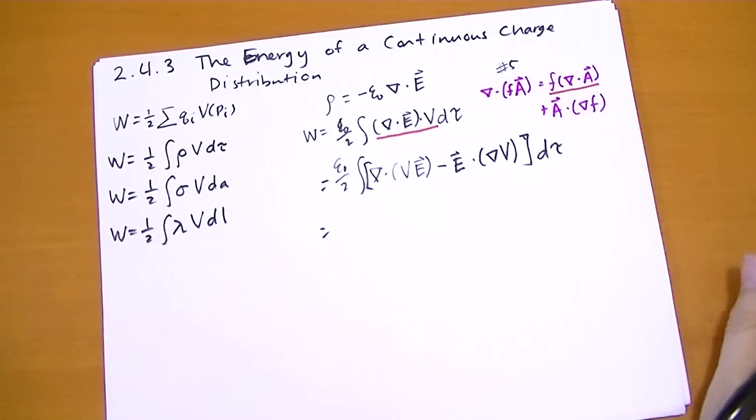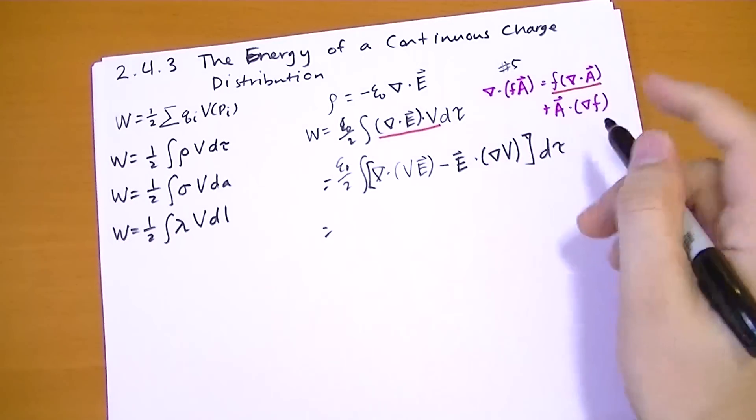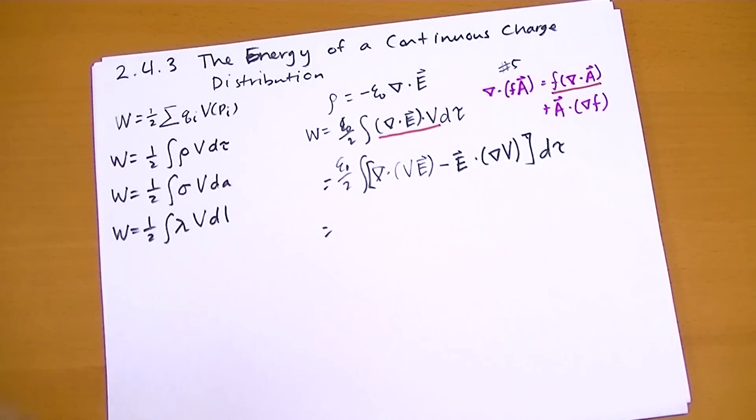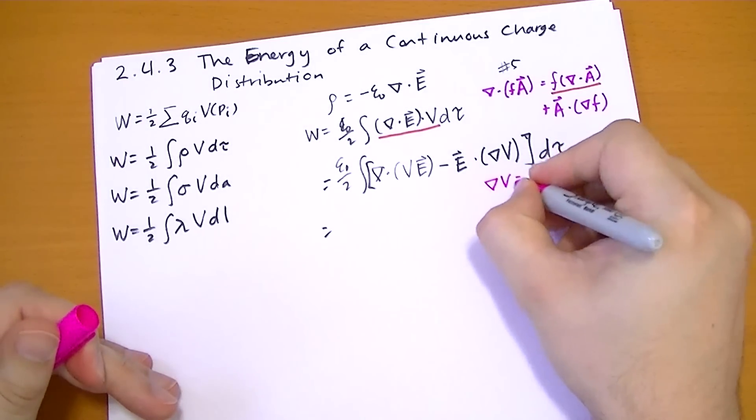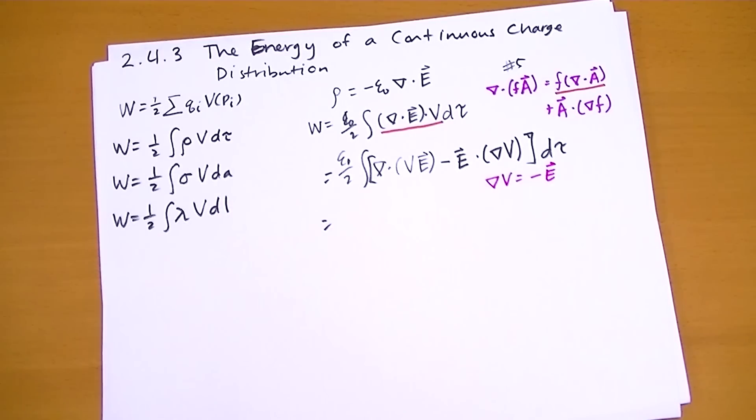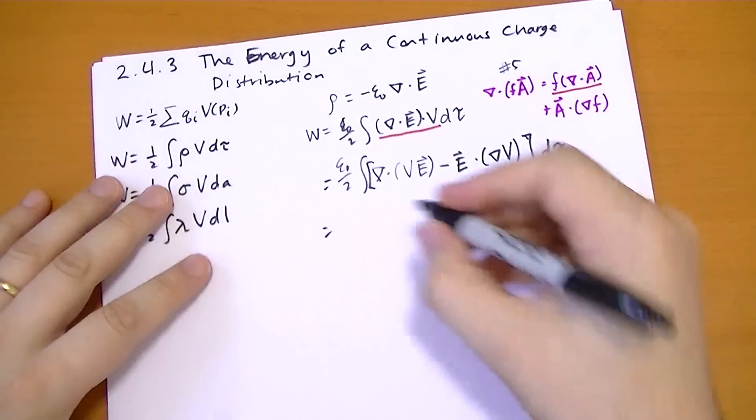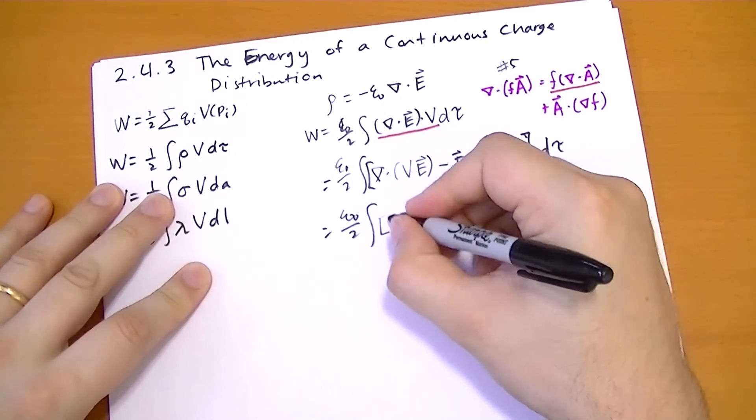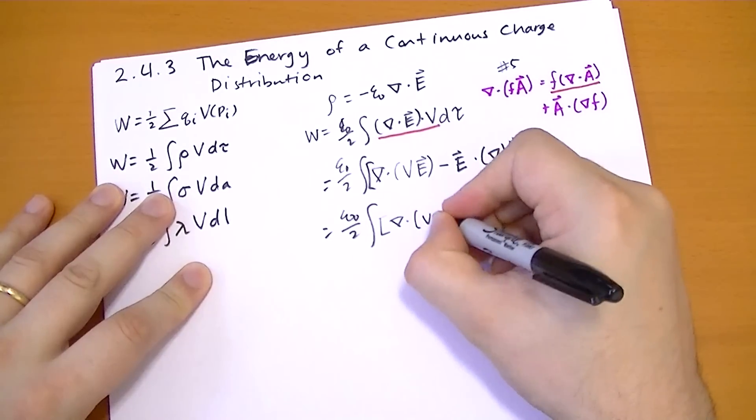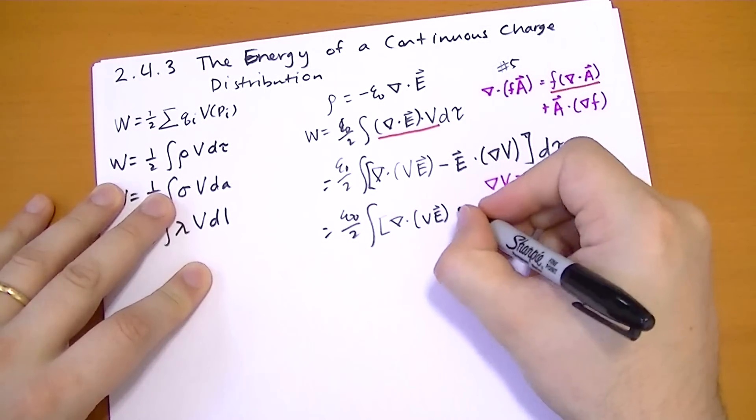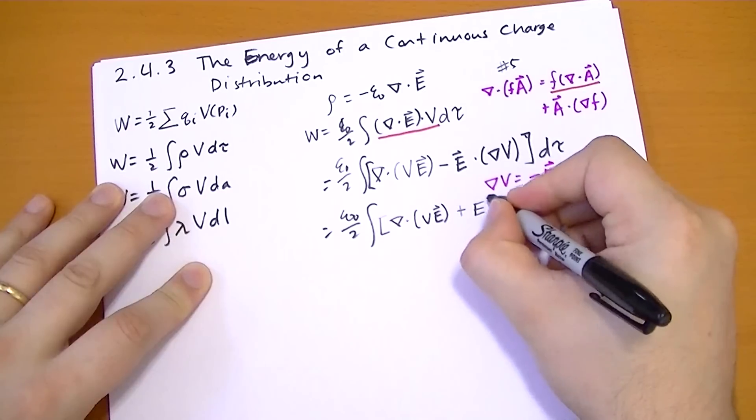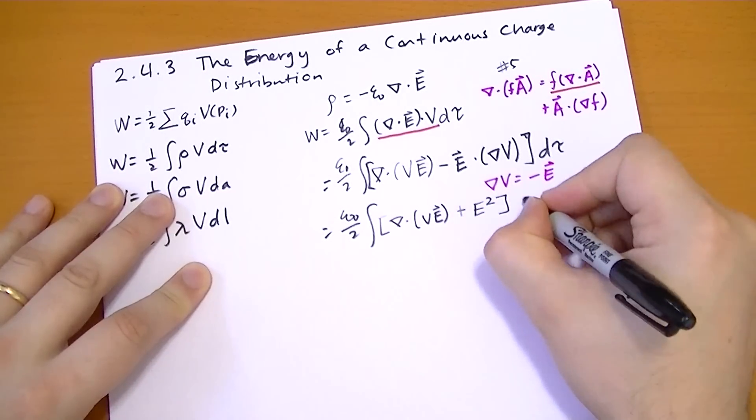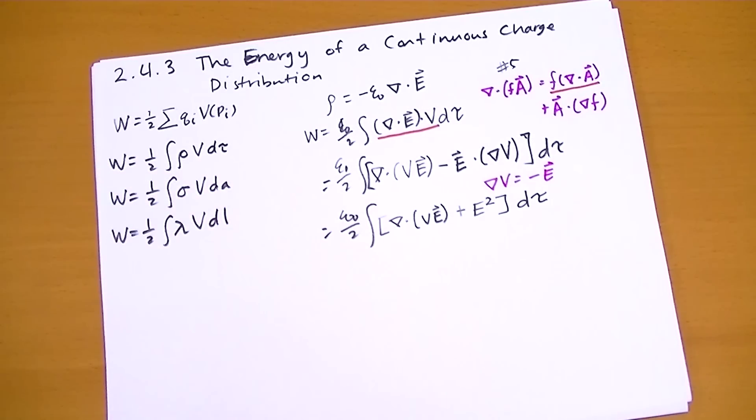Well, what's the gradient of the potential? The gradient of the potential is minus the electric field. So now we have epsilon naught over 2, divergence of the two fields multiplied by each other plus, because the minus signs cancel, E squared d tau. We're not done yet.